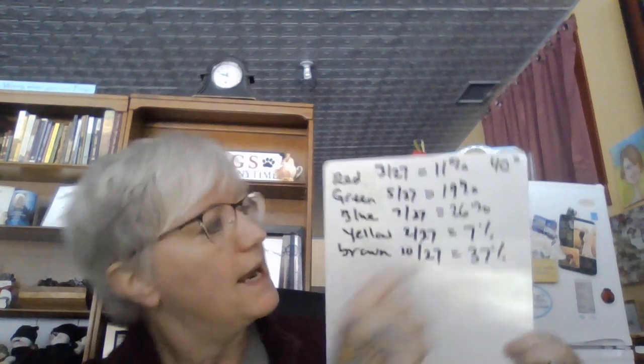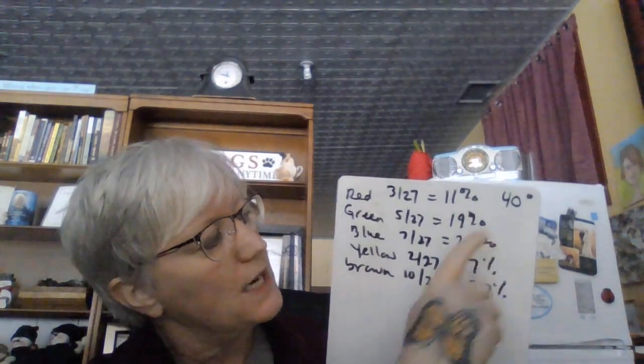The next thing is to change these into degrees. To change a percentage into degrees, you take your decimal times 360. So 0.11 times 360 is 39.6 — I'll say 40 degrees. 0.19 times 360 is 68.4 — so 68 degrees. 0.26 times 360 is 93.6 — so 94 degrees. For 7%, remember it's 0.07, not 0.7 — 0.07 times 360 is 25.2, so 25 degrees. And 37% is 0.37 times 360 is 133.2, so 133 degrees.